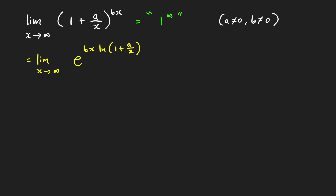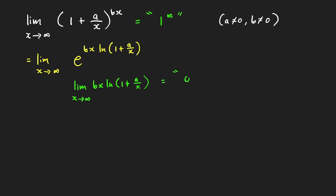The next step is to evaluate the limit of the power. We find the limit of bx times ln of (1 plus a over x) as x goes to infinity. Because if the original limit has the form 1 raised to infinity, this power will have the form 0 times infinity. Here, bx goes to positive or negative infinity, and ln of 1 equals 0, so this has the form infinity times 0.